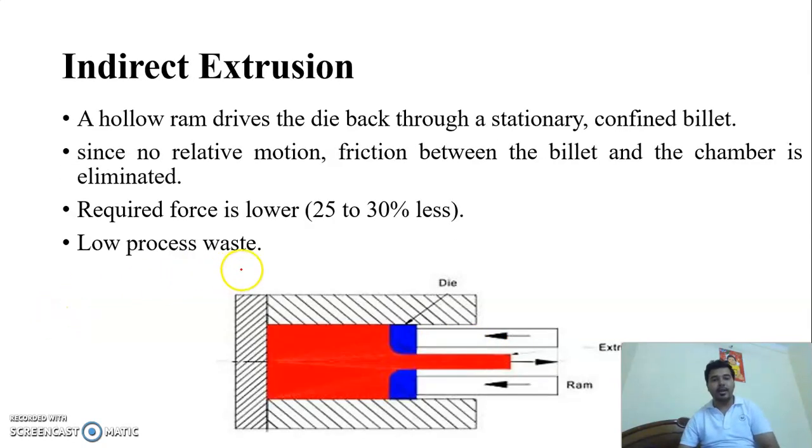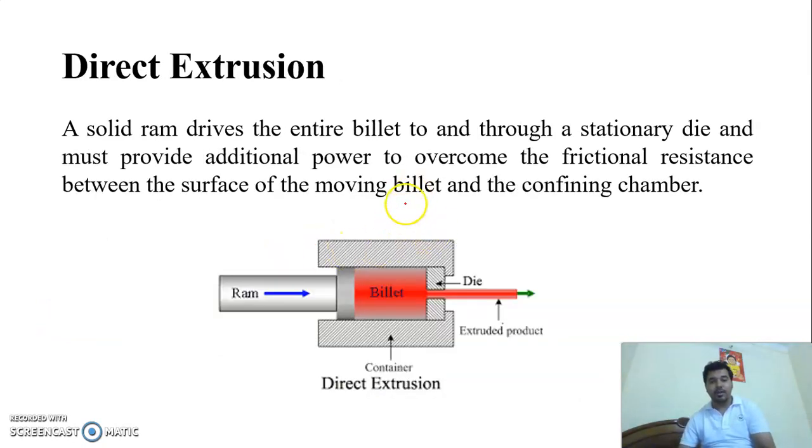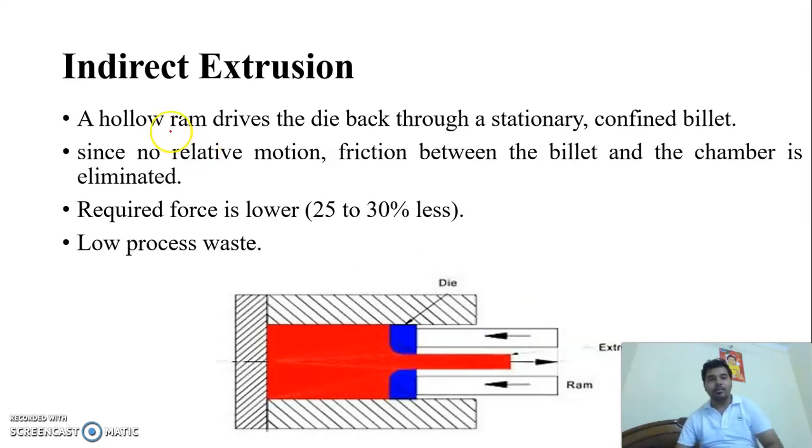Also in indirect Extrusion, one of the problem in direct Extrusion was there is a direct contact between billet, which is hot, and confining chamber. Due to this, friction was occurring in direct Extrusion. But this problem is not in indirect Extrusion. As we can see from this diagram, there is no direct contact of the Extrusion part with the containing chamber, so the friction problem is reduced.